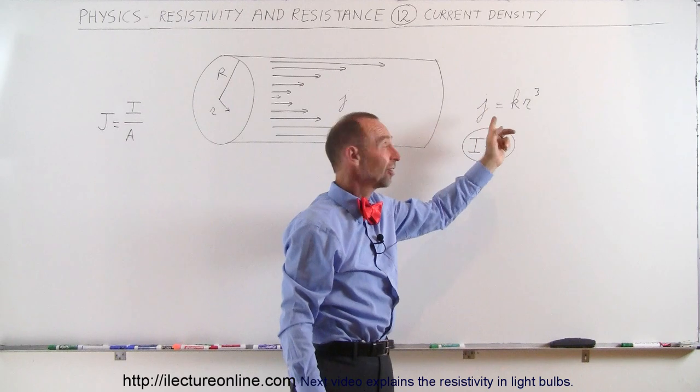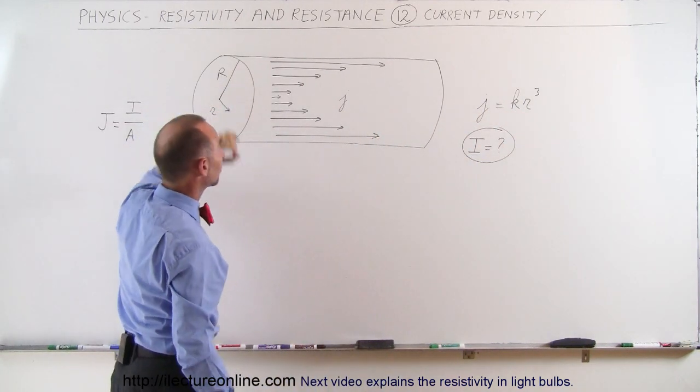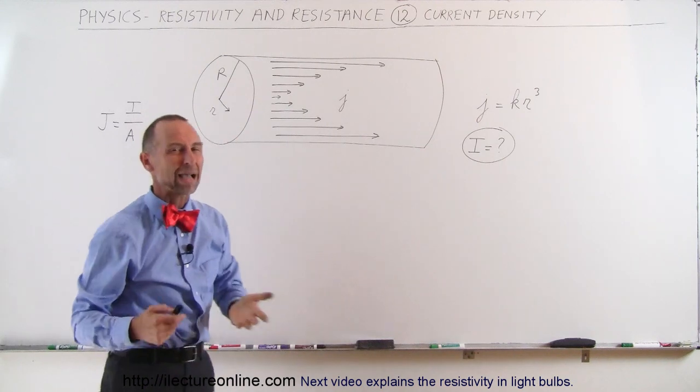So when R is zero, current density is zero. When R is its maximum, R, the radius of the cylinder, then you see you have the maximum current density.